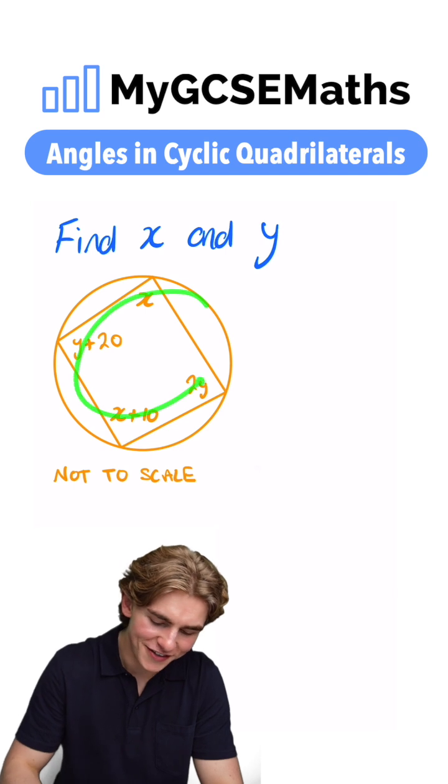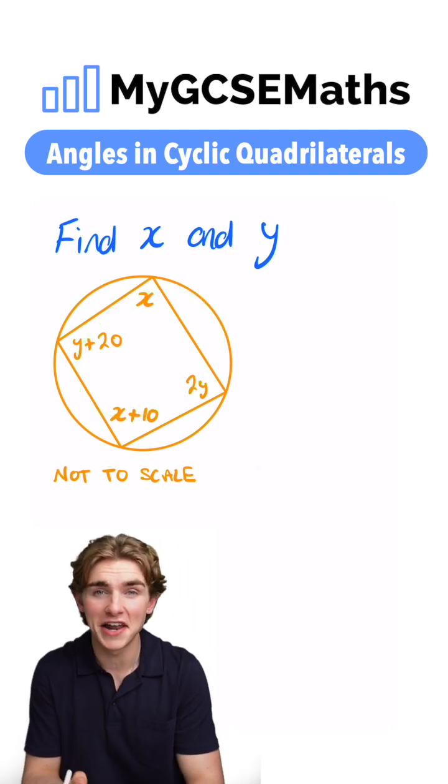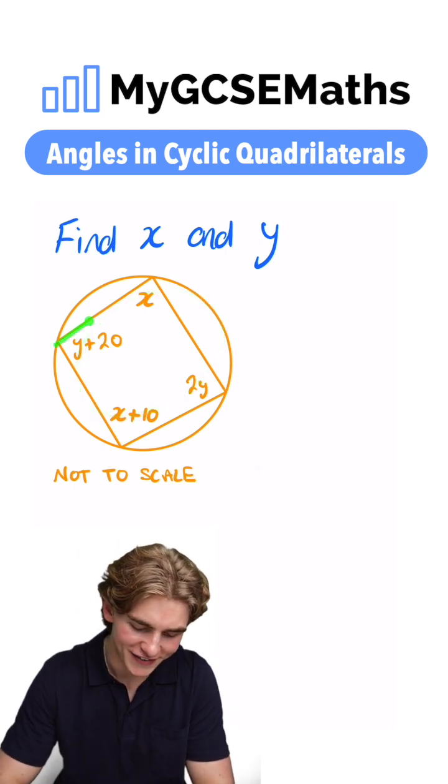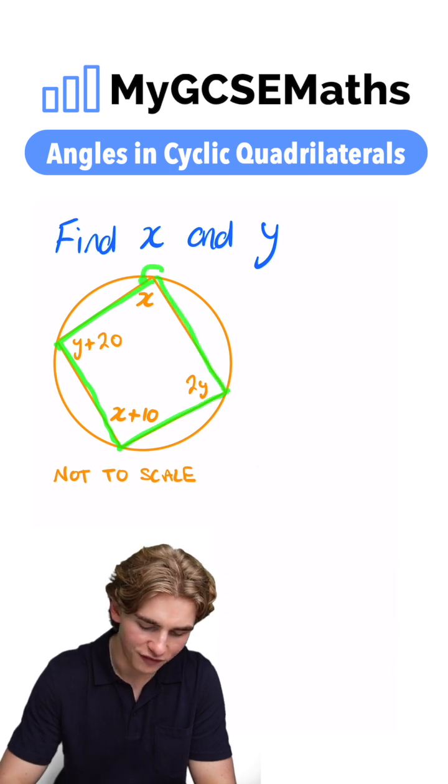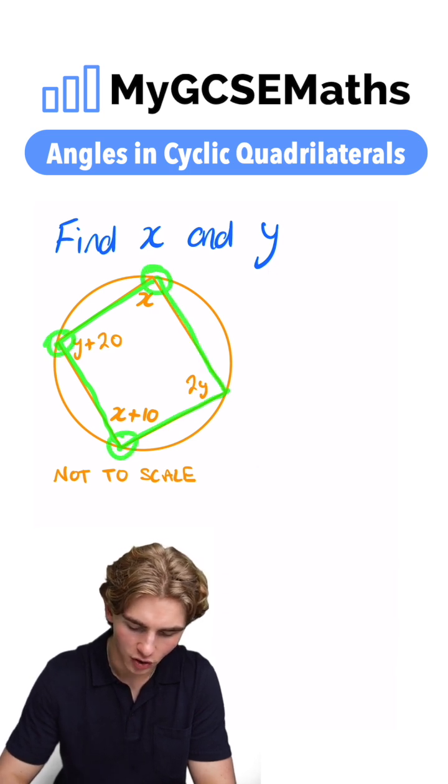Okay guys, what do we have here? Well, the title of this video may have given it away a little bit, but what we have is a cyclic quadrilateral. That's because we have a four-sided shape here where all four of the corners are on our circle.